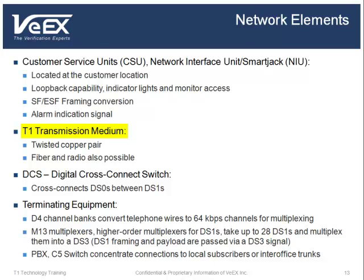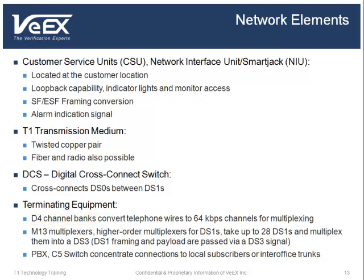The medium for T1 transmissions is twisted copper pair cabling. Fiber and radio are also possible, but they are less common. Digital cross-connect systems, or DCS, are used to rearrange and interconnect lower-level channels, such as DS0s, into higher-level signals, such as DS1s. A DCS can also accommodate higher rates, such as T3 or Synchronous Optical Networking, also known as SONET. D4 channel banks convert ordinary telephone wires to 64 kbps channels for multiplexing onto a DS1. M13 multiplexers, which are higher-order multiplexers for DS1s, take up to 28 DS1s and multiplex them into a DS3. The DS1 framing and payload are passed by a DS3 signal.